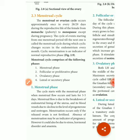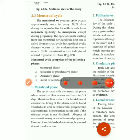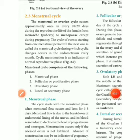Sometimes polymenorrhea happens due to sexually transmitted diseases, STD. Sexually transmitted diseases such as chlamydia or gonorrhea also cause polymenorrhea. So polymenorrhea is caused by many reasons. In polymenorrhea, the menstrual cycle is reduced to fewer than 21 days.